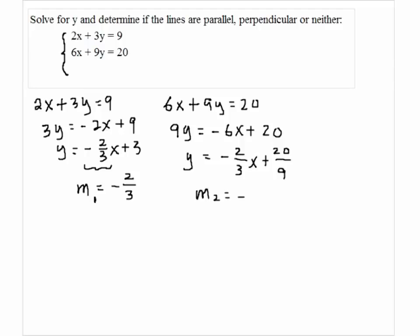So the slope m2 will be negative 2 thirds. Now let's compare these two slopes. Notice that m1 is the same as m2. Therefore, line 1 and line 2 are parallel.